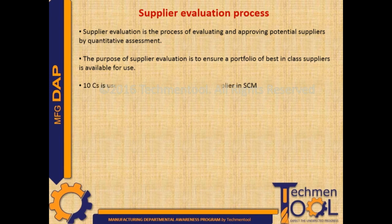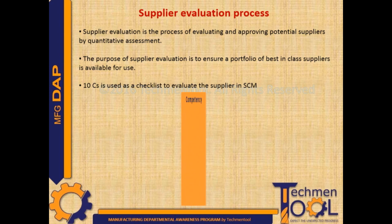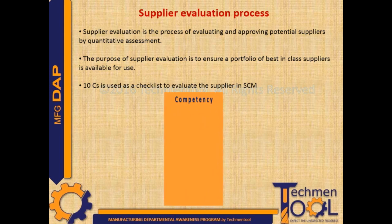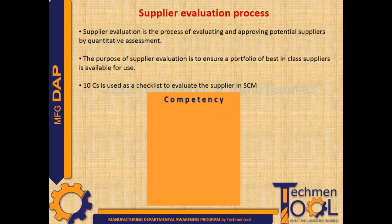The 10 C's is used as a checklist to evaluate the supplier in supply chain management. The first C is Competency, which means how competent the supplier is. This measures the supplier's capabilities against needs.